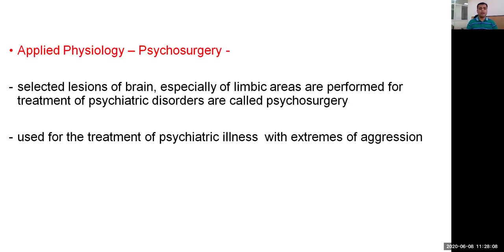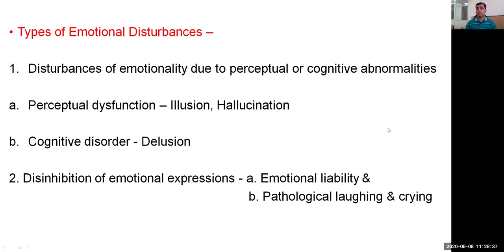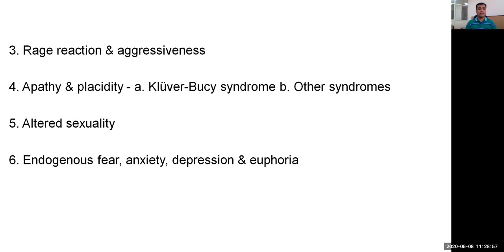Applied aspects: Psychosurgery involves selected lesions of the brain, especially of limbic areas, performed for treatment of psychiatric disorders, particularly those with extremes of aggression. Types of emotional disturbances include: disturbances of emotionality due to perceptual or cognitive abnormalities — perceptual dysfunction includes hallucinations, cognitive disorders include delusions — inhibition of emotional expression, emotional lability, pathological laughing or anger, rage reactions and aggressiveness, apathy and placidity leading to Kluver-Bucy syndrome, altered sexuality, endogenous fear, anxiety, depression, and euphoria.